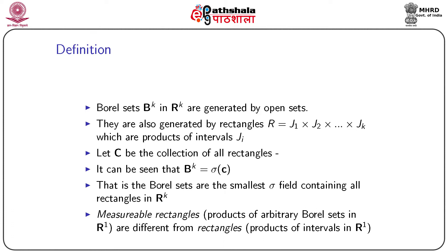We know that in the real line we have Borel sets, which are generated by open sets. If we consider the k-dimensional Borel sets Bk in k-dimensional real line Rk, these Bk are generated by open sets. We can generate these open sets by rectangles, for example R = J1 × J2 × ... × Jk, which are products of intervals. We consider C as the collection of all such rectangles, and Bk is the sigma field generated by C — that is, Bk is the smallest sigma field containing all rectangles in Rk.